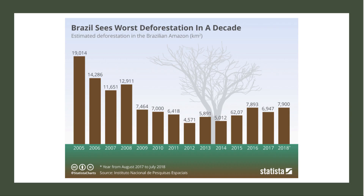Here's a chart showing deforestation in Brazil. Estimated deforestation in terms of square kilometres between August 2017 and August 2018 — approximately just under 8,000 square kilometres of rainforest was destroyed. In rough terms, that's an area probably about five times the size of London.